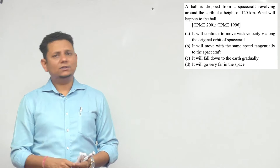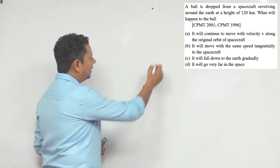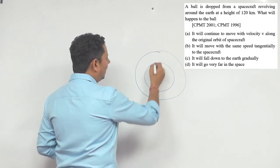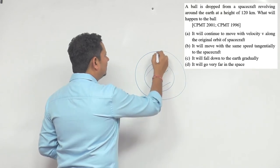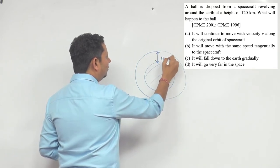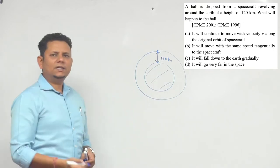Simple but conceptual clarity check. So this is your satellite path and this is your earth. Here we're given that at 120 kilometer height there is a satellite.